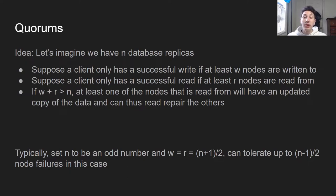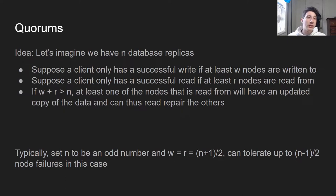If w plus r is greater than n — so if the nodes you have to write to for a successful write plus the nodes you have to read from for a successful read sum to more than the total number of nodes — we know that one of the nodes we'll be reading from has one of the most updated values, and then we can use read repair to update the others. Typically you'd set n to be an odd number. Say n is 7 and w and r are (n+1)/2, so w and r equal 4. If w and r are 4 and n is 7, we can tolerate up to 3 replica failures.